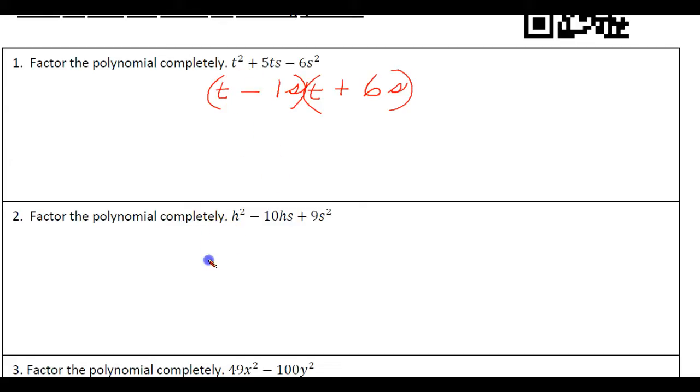Okay, standard form, no common factors. H and H. S and S. And again I have a 9 and a 1. 9 times 1 is 9, but our inners and outers, so that it adds up to a negative 10. Both of these need to be negative.